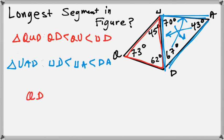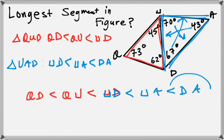We know that QD is the shortest. Its length is less than QU. And the length of UD is bigger than those. But UD also belongs to this list, which is less than UA, which is less than DA. So the longest segment in this picture is DA.